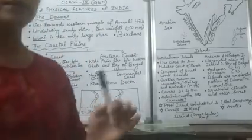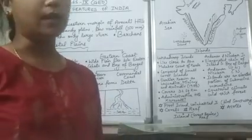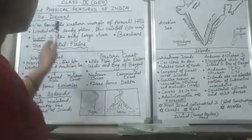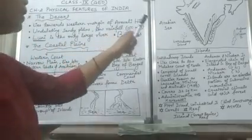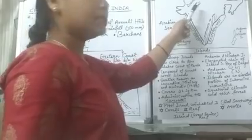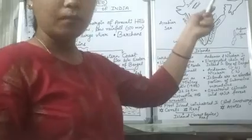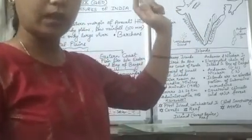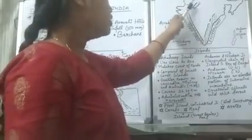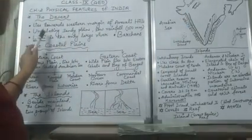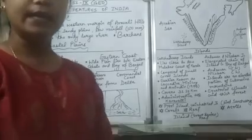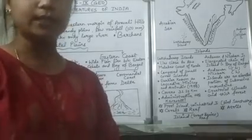First of all we'll be talking about the desert. The major part of our desert lies in the Rajasthan state. The exact location of the desert is towards the western margin of the Aravali hills, as you can see here — these are the Aravali ranges which lie in the northwest portion of the Malwa Plateau, which we discussed in our previous video. To the west side of the Aravali ranges, we find the desert area.